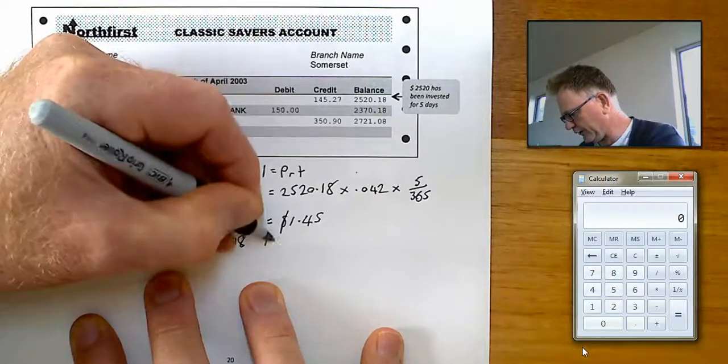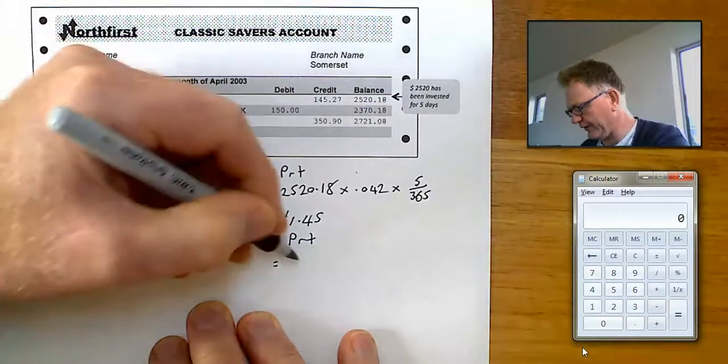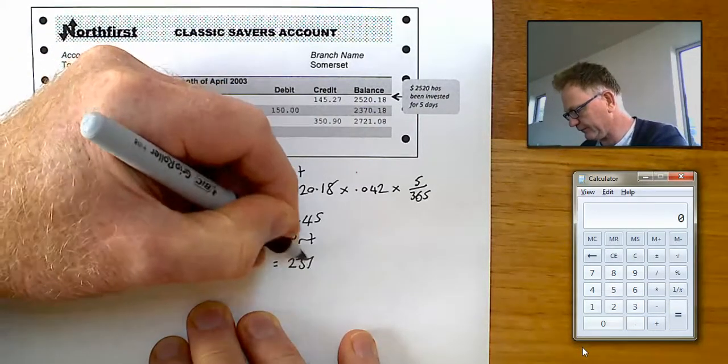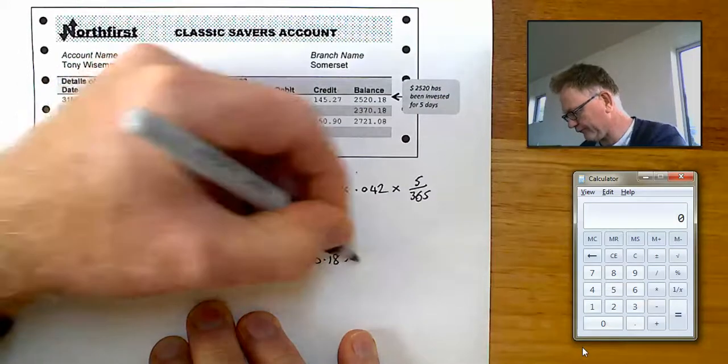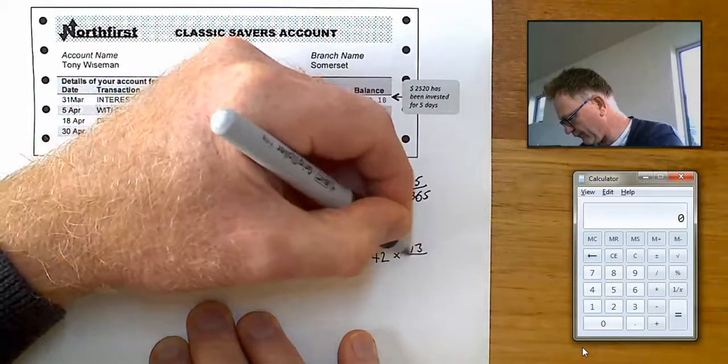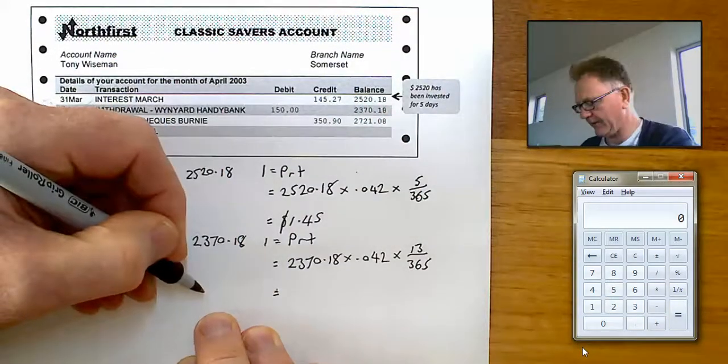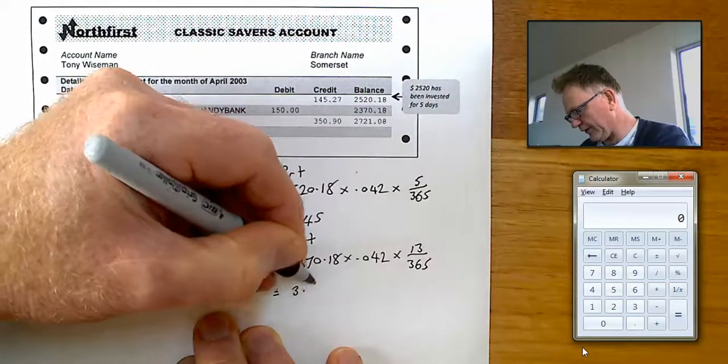We can use I equals PRT to work out how much interest he should get for those 13 days. I've done the calculations in advance. $3.55.